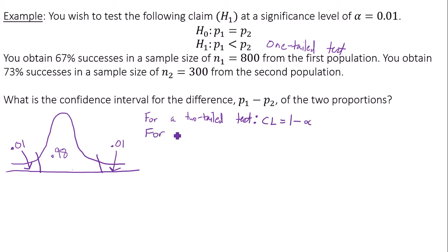For a one-tailed test though, which is what's happening here, your confidence level is 1 minus 2 times α.